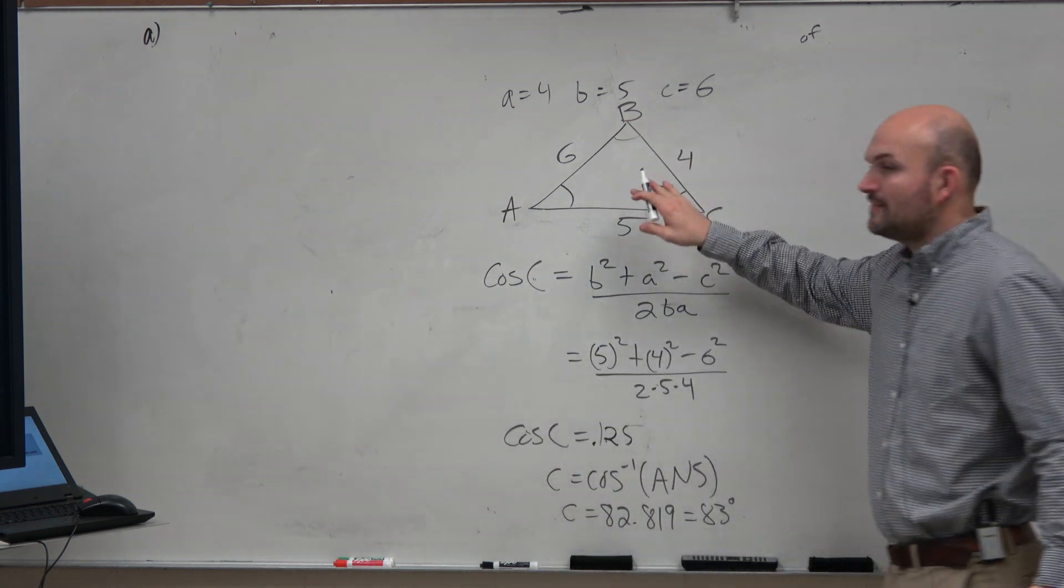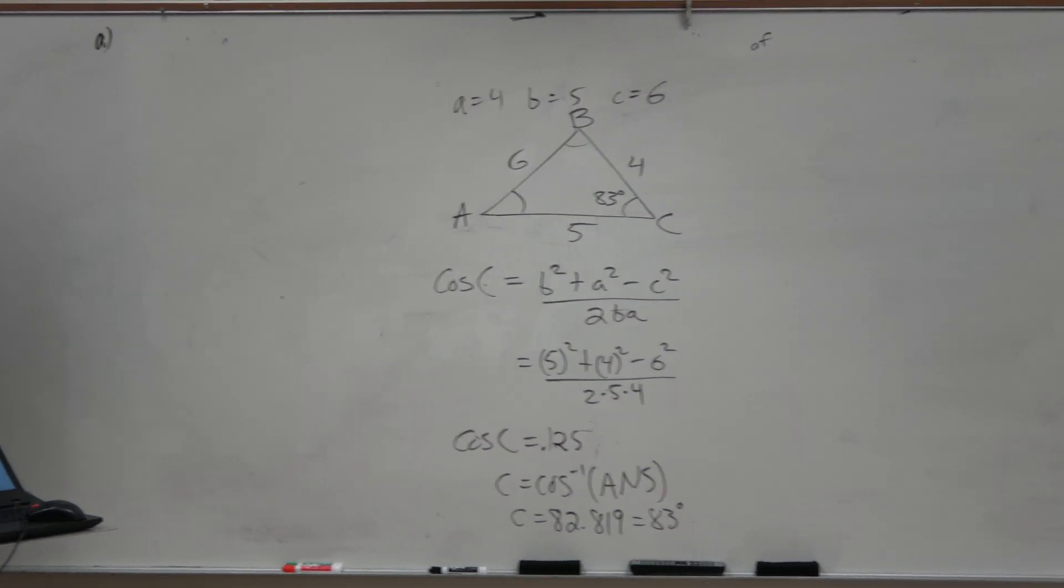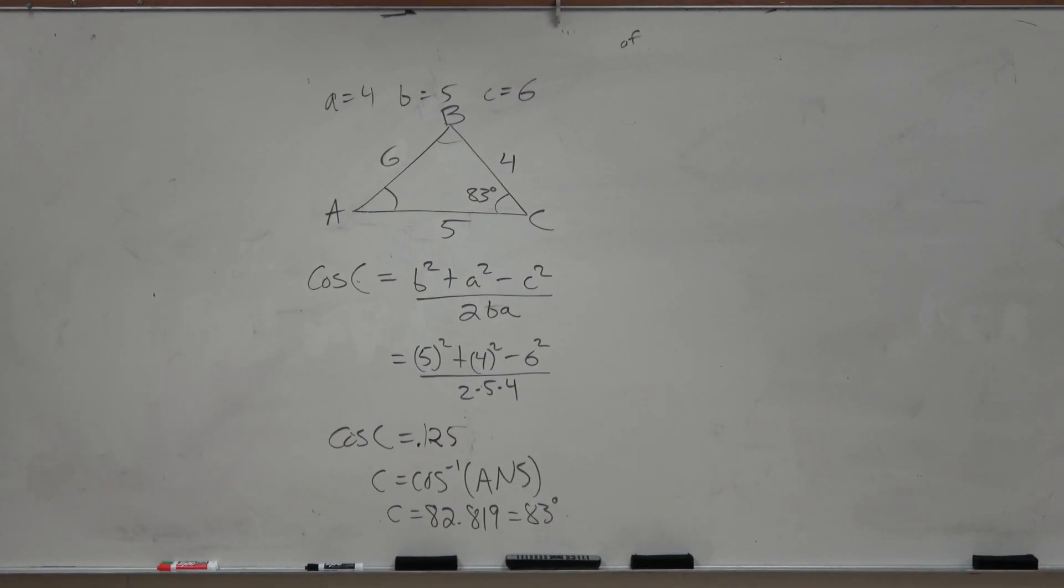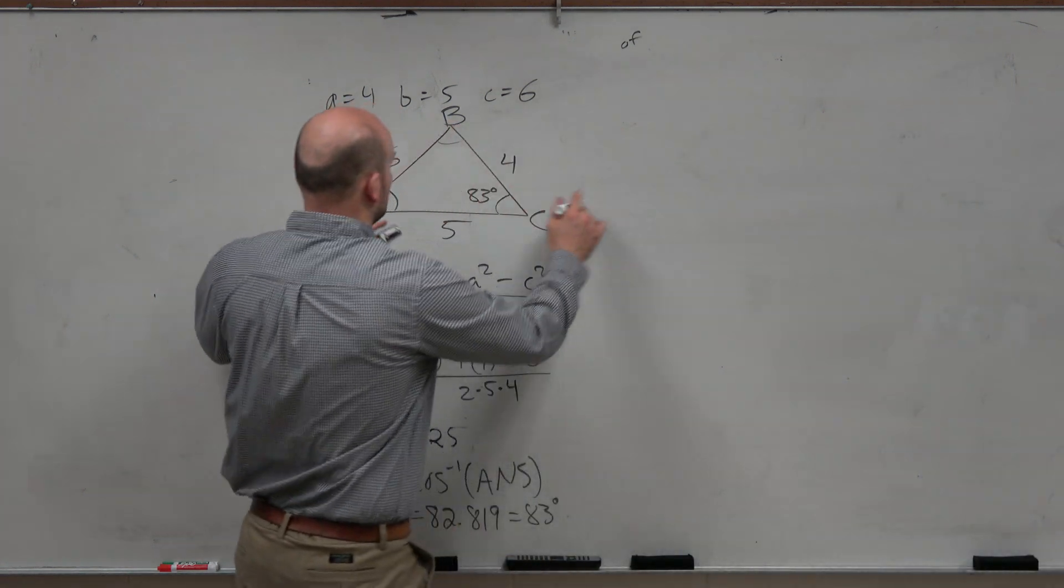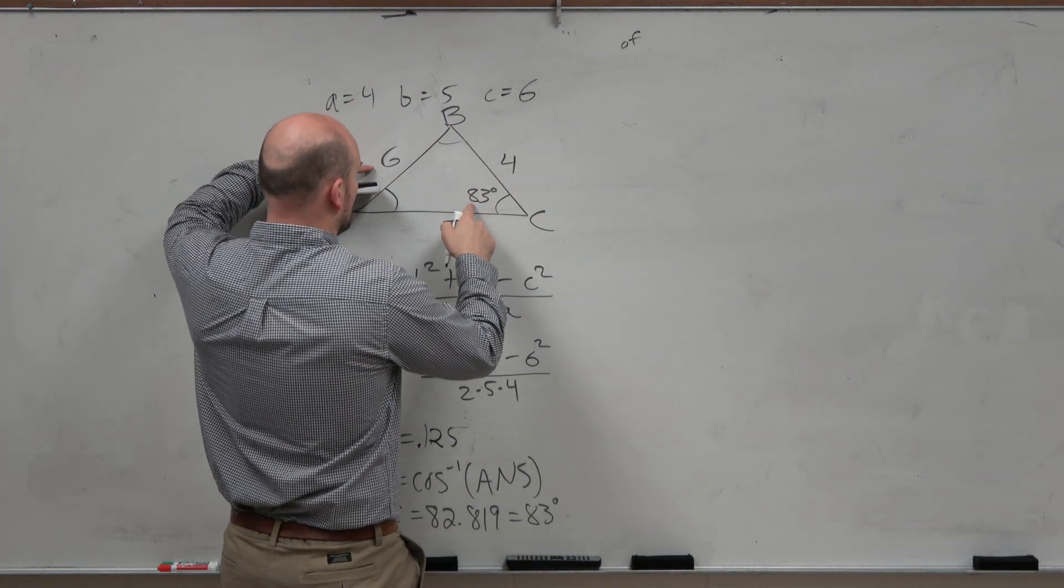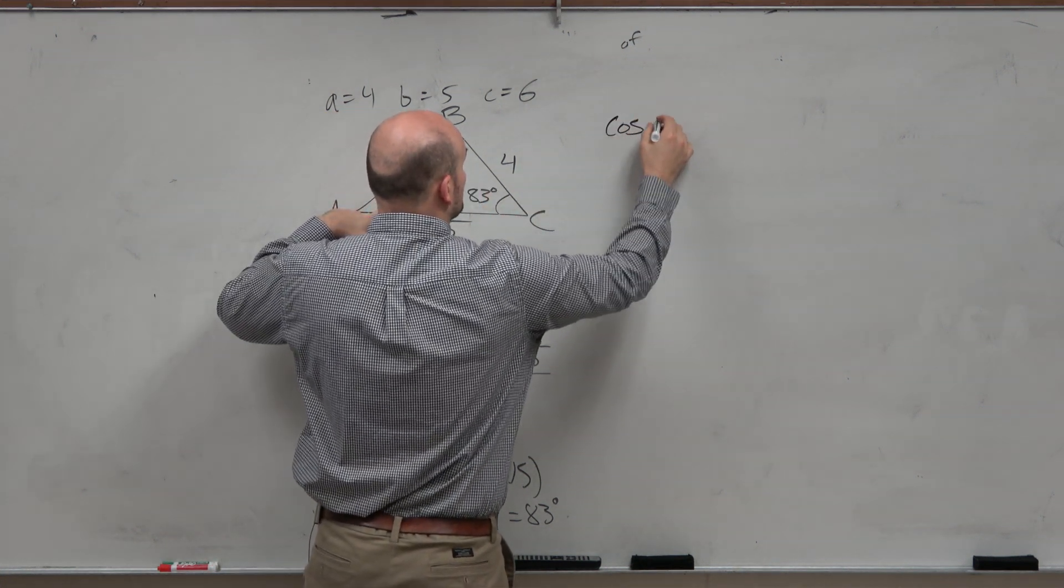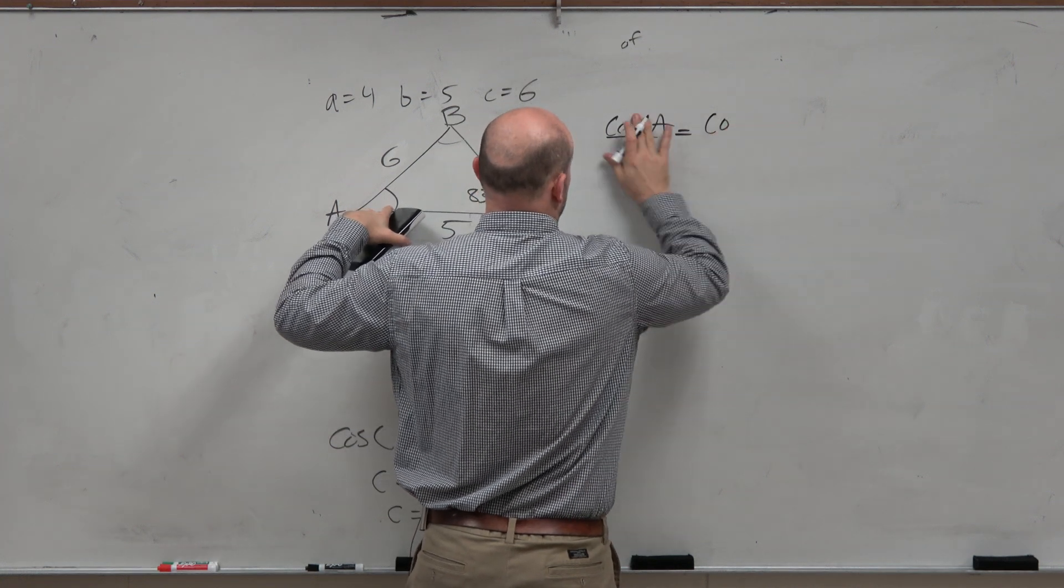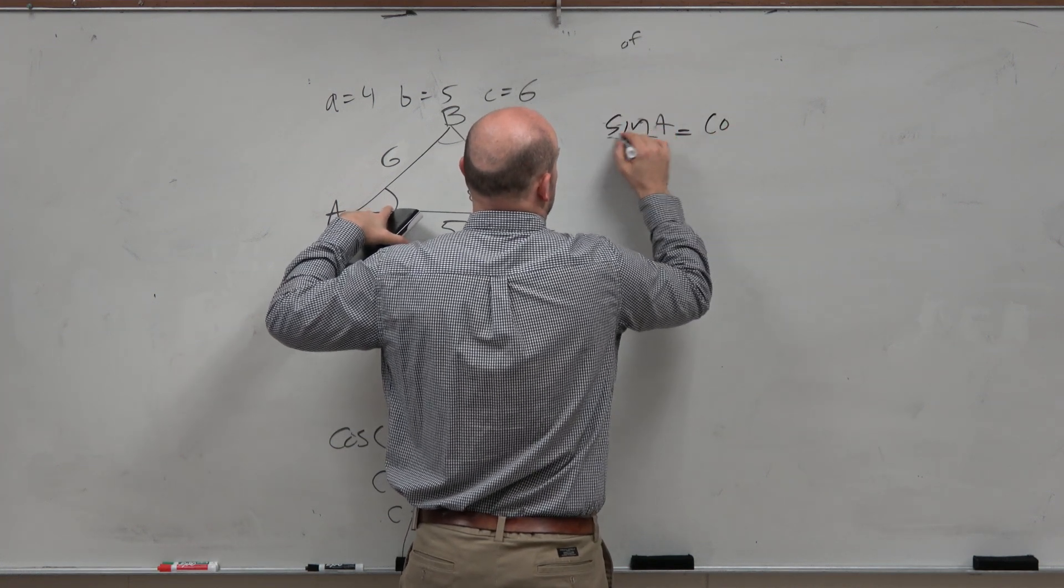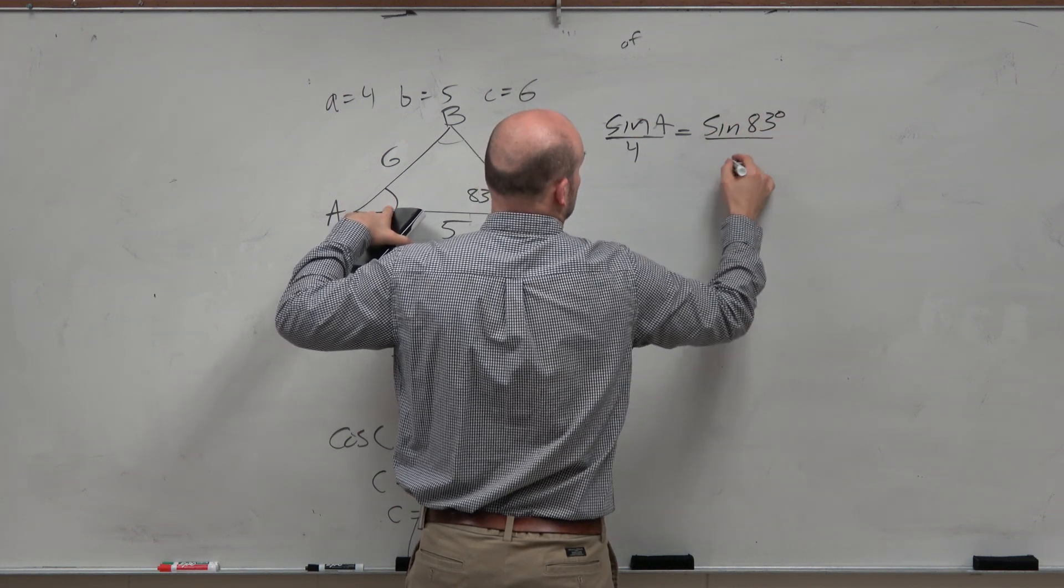I prefer, now that I know I don't have to worry about the ambiguous case, I'm going to go ahead and just use the law of sines. So therefore, I now have a ratio. And I'm going to find, let's just find A. So I'm going to use this ratio, sine of A over 4 is equal to sine of 83 degrees over 6.